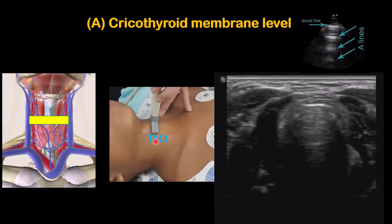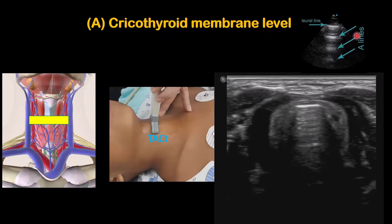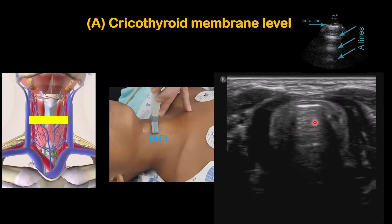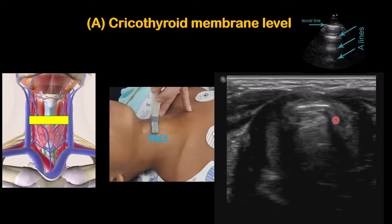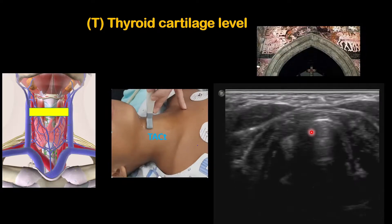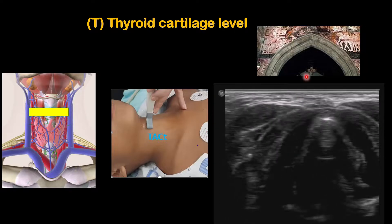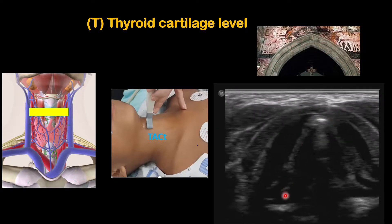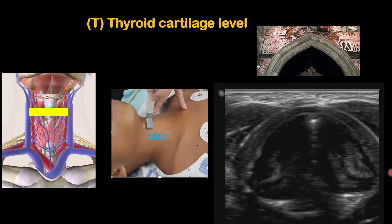Moving further upward, you will see the A — the cricothyroid membrane level — where you can see the membrane and multiple echo lines representing the airway. Moving further upward still is the thyroid cartilage level. The dome shape gradually comes out as you move the probe slowly upward.